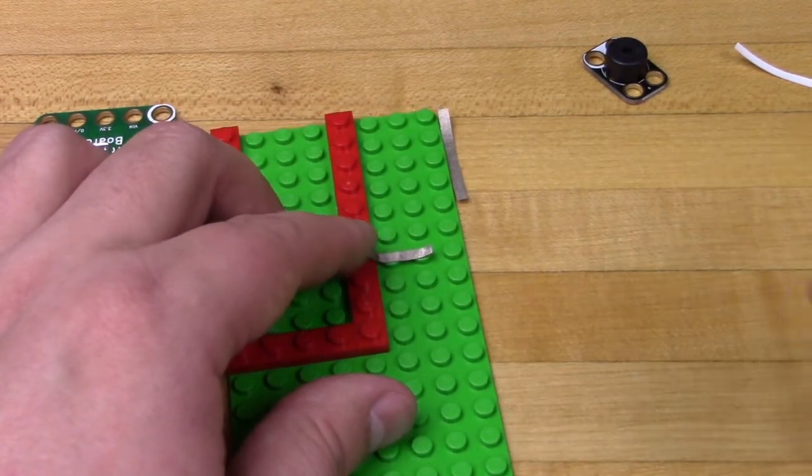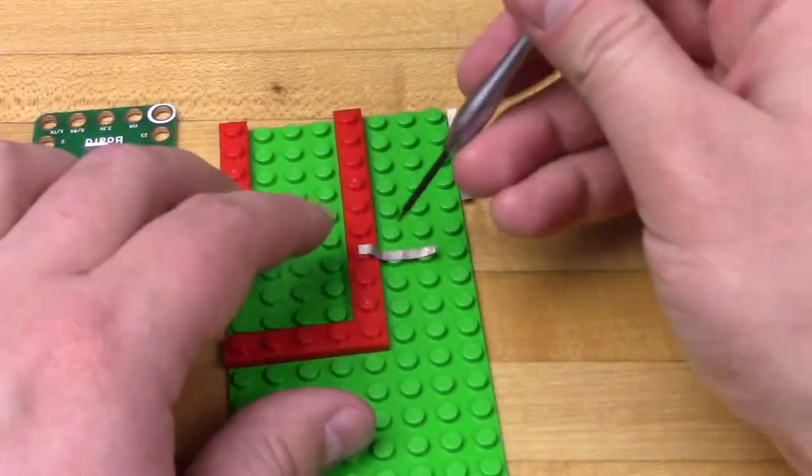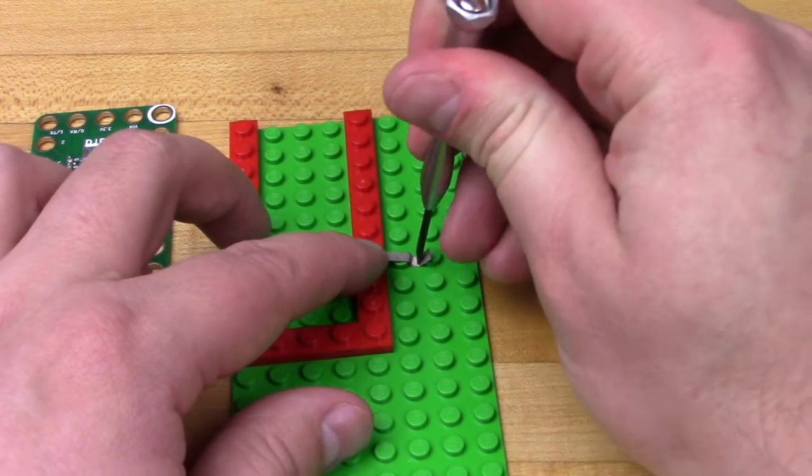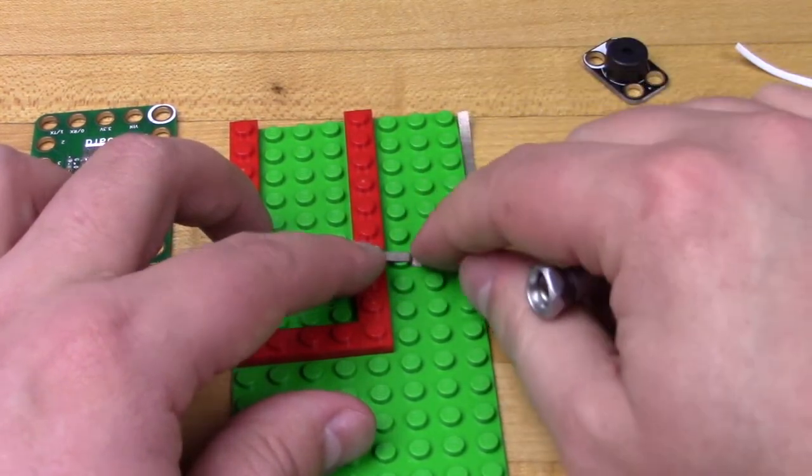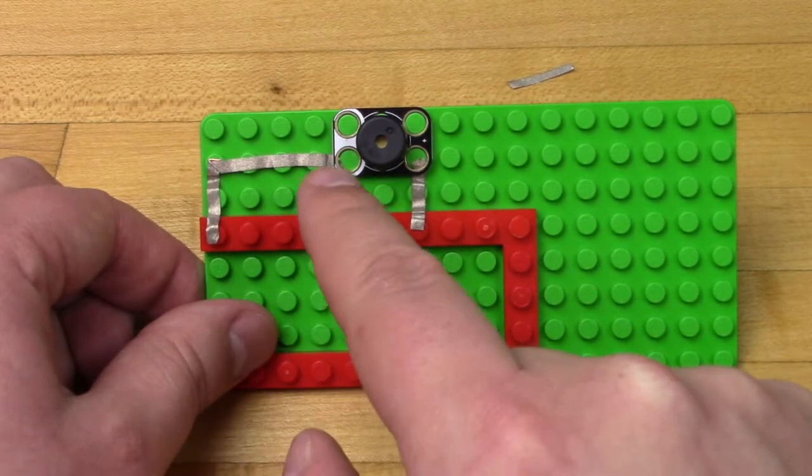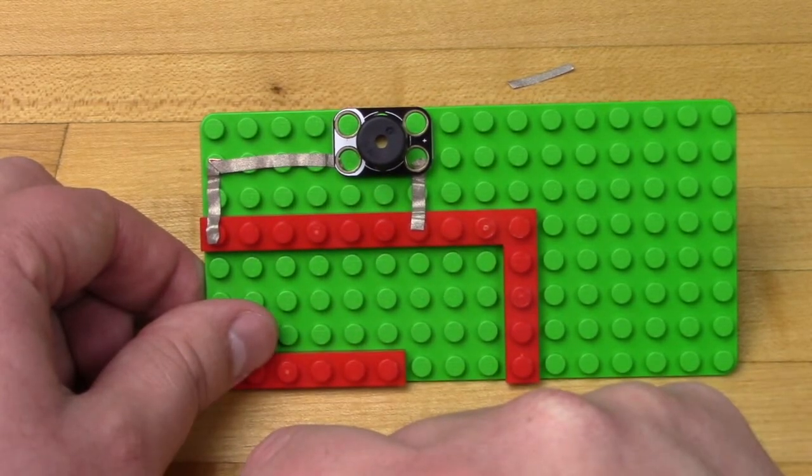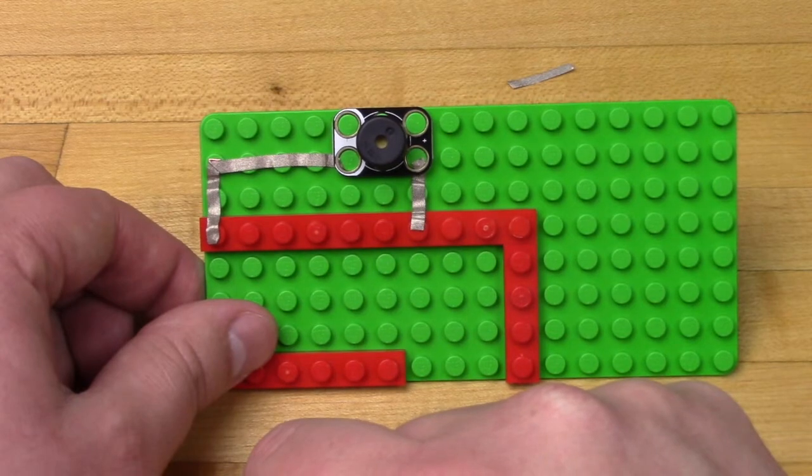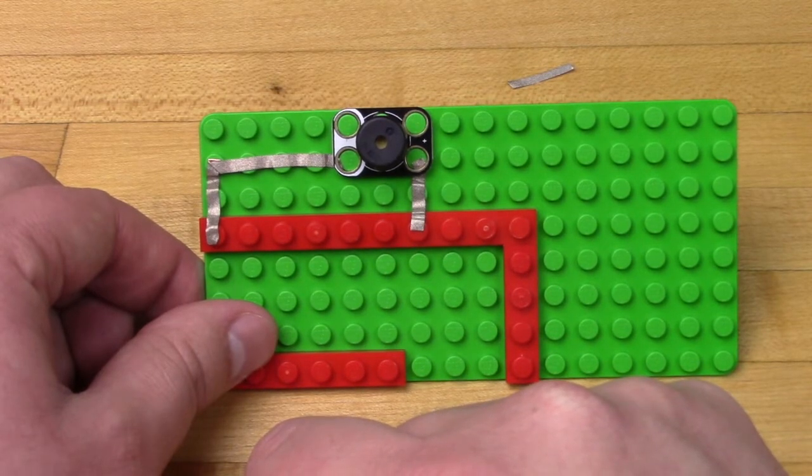We're going to use a small screwdriver just to push the tape down and make things look nicer, but you don't really need to do that. Your fingernail will work just fine. Do the same thing by going from ground to the ground of the piezo speaker. It doesn't matter which way the piezo speaker is put down, it will work just fine either way if you have it backwards.